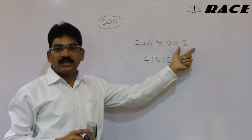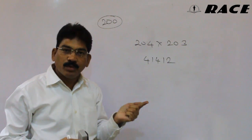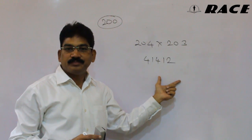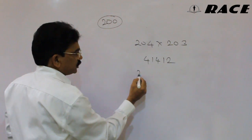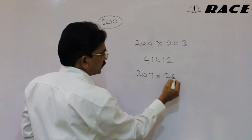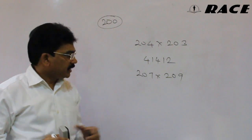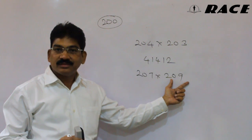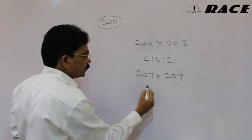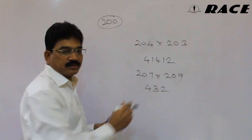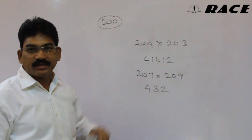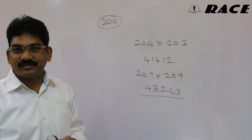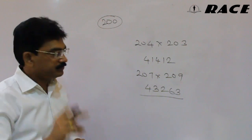To confirm: 204 plus 3 is 207, double is 414, and 4 into 3 is 12. We take another example: 207 into 209. Here 207 plus 9 is 216, double is 432. This is the first part. 7 into 9 is 63, which is the second part. So the answer is 43263.